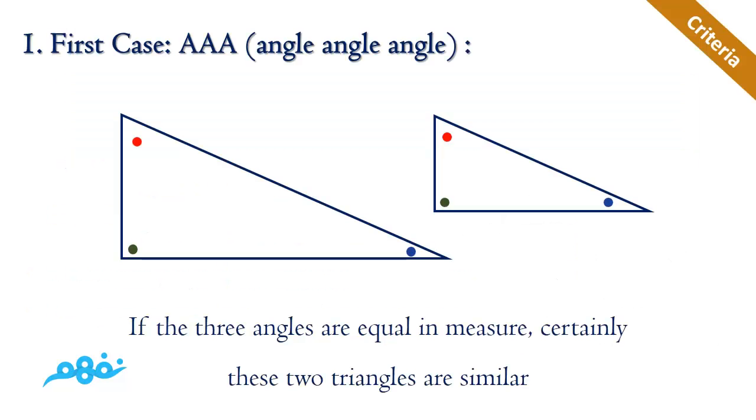If asked how to prove that two triangles are similar, it's not given—it must be proved. We have three cases to decide if they are similar or not. The first case is called AAA, or angle-angle-angle. If two triangles have three angles that are equal in measure or congruent, certainly the two triangles are similar.